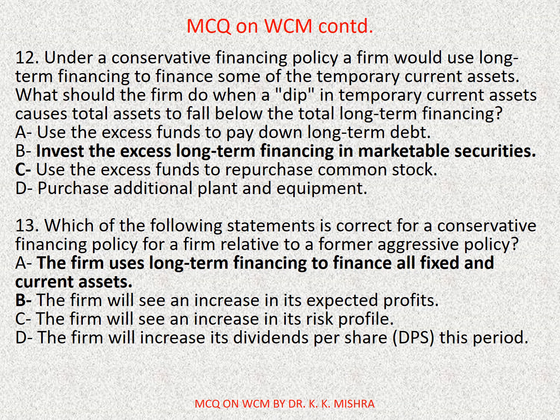Question number twelve: under a conservative financing policy, a firm would use long-term financing to finance some of the temporary current assets. What should the firm do when a dip in temporary current assets causes total assets to fall below the total long-term financing? Options are: A) use the excess funds to pay down long-term debt, B) invest the excess long-term financing in marketable securities, C) use the excess funds to repurchase common stock, D) purchase additional plant and equipment. Correct option is B: invest the excess long-term financing in marketable securities.